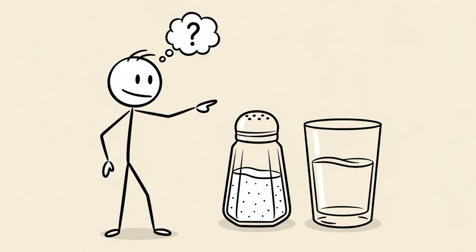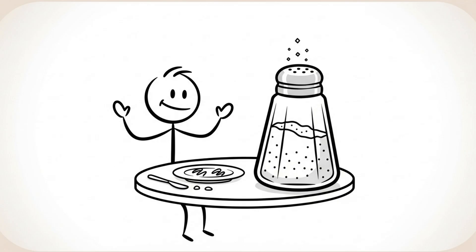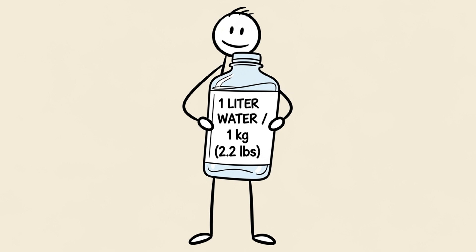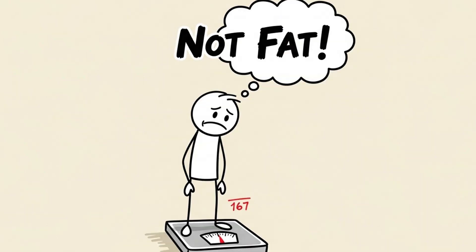One, sodium and water. Did you have a high-salt meal last night? Your body will hold on to extra water to balance it. Just one liter of retained water weighs one kilogram, 2.2 pounds. The scale will be up, but you didn't gain fat.